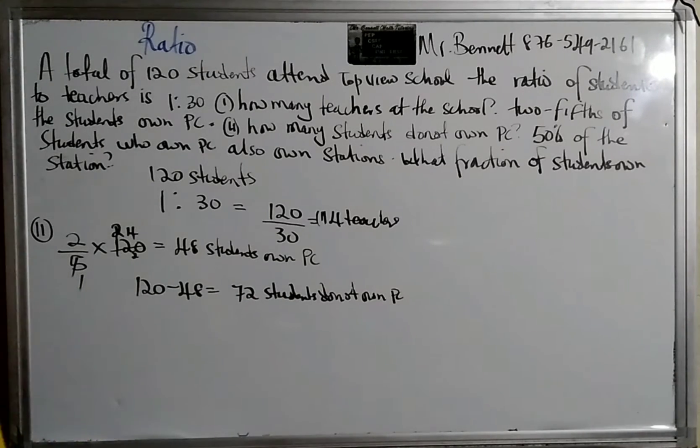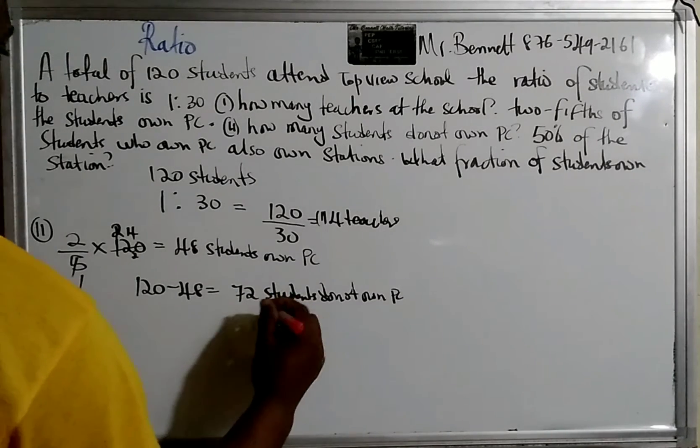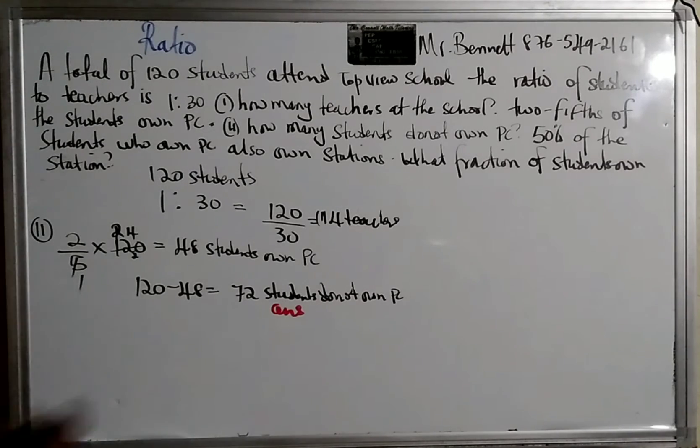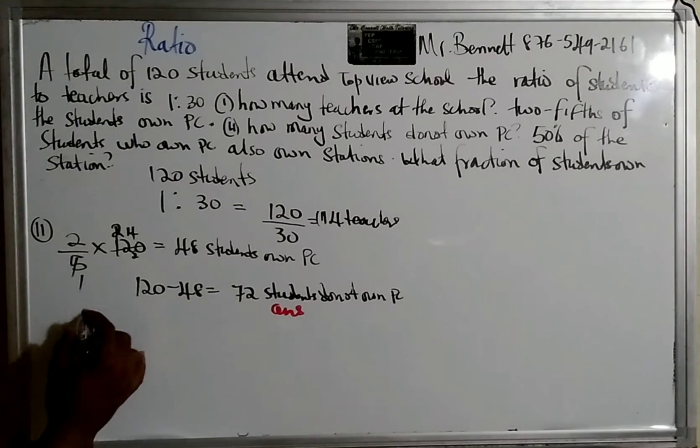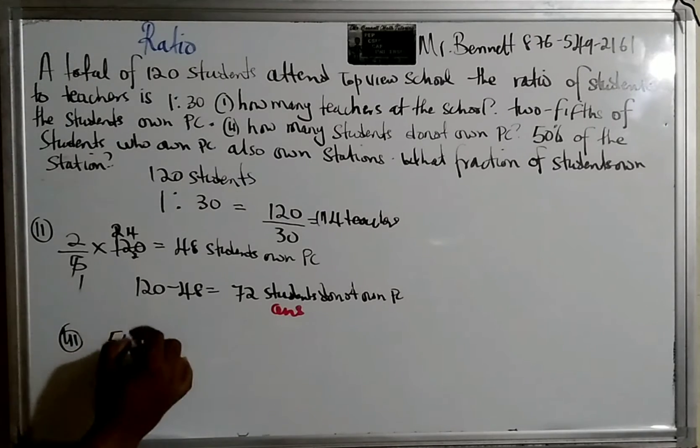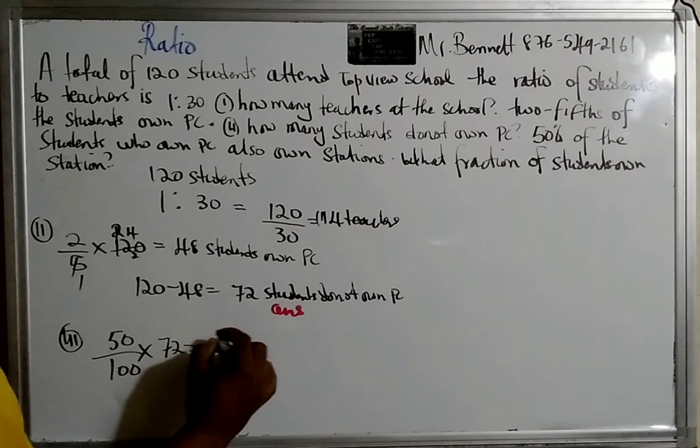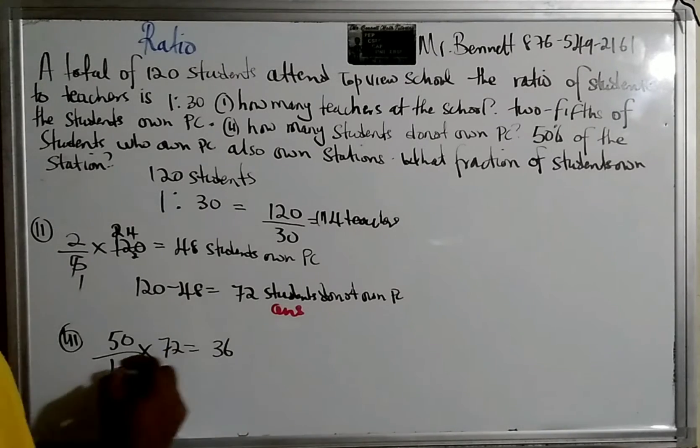It gives us, they say 50% of the students who own PC also own station. So what we have to do is find 50% of this. So 50% of 72 is equal to 36.